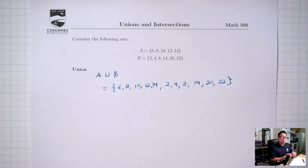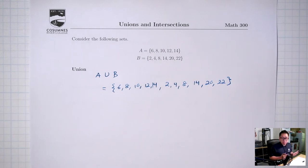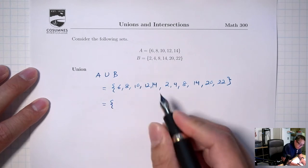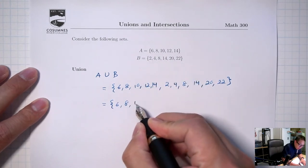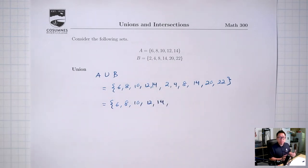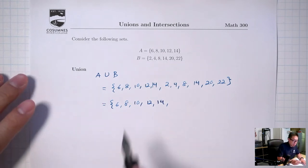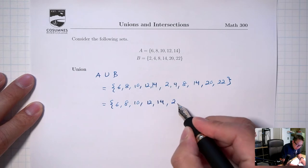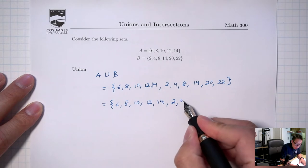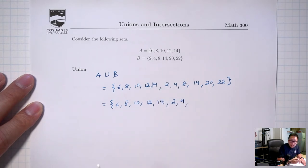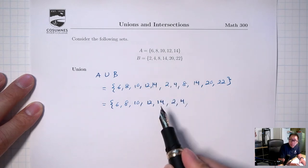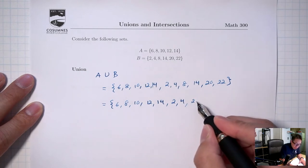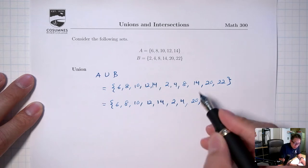I do recommend you remove all the repeats and also put things in order, because it's going to make things simpler later on when we talk about subsets and complements. The way I usually do the union, so that I don't have any repeats, is to write out the first set as is — so 6, 8, 10, 12, 14 — and then go to my second set and just add on anything that's new without putting any repeats in. So looking through my second set: 2 is new so I'll add on 2; 4 is new so I'll add on 4; 8 I have already so I'm not going to add another 8; 14 I also have already; 20 is new so I'll add on 20; 22 is also new so I'll add on 22.